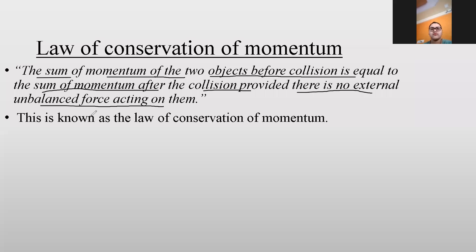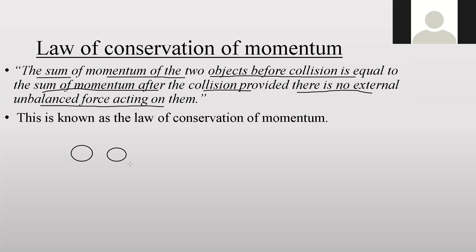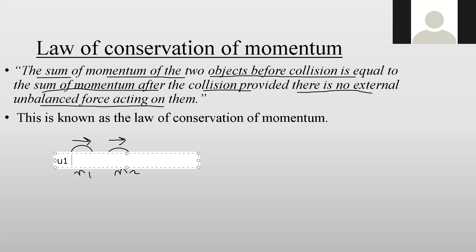This statement means that suppose there are two objects — two balls having mass m1 and m2 — moving in the same direction. Let the initial velocity of the first ball be u1 and for the second ball it will be u2. We always use u1 and u2 to express the initial velocity.